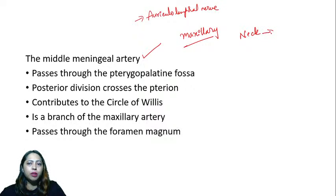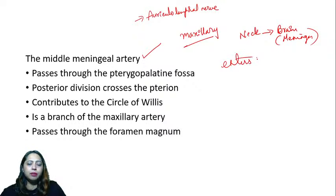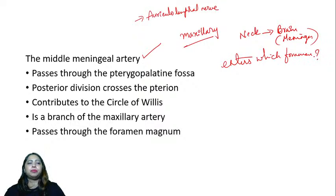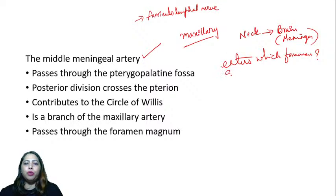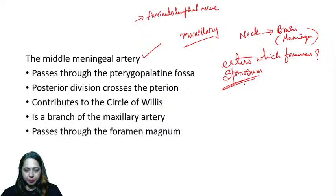Which foramen does the middle meningeal artery enter? It enters through the foramen spinosum. Some options were suggested — it does not pass through the pterygopalatine fossa. It is the anterior division that crosses the pterion, not the posterior division. It does not contribute to the circle of Willis.